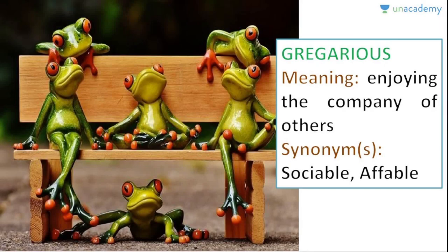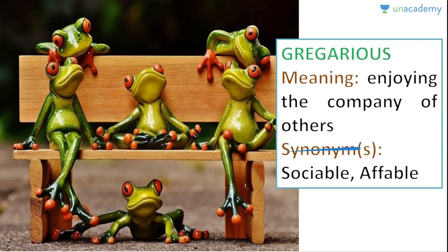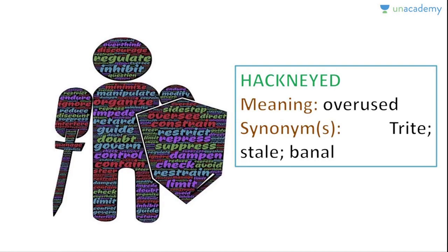Gregarious — look at this center frog surrounded by all his friends. Gregarious is somebody who enjoys the company of others — a sociable or affable person. If you know somebody who is outgoing, sociable, fond of the company of other people, you might want to call him or her gregarious. Gregarious people are likely to hang out with friends every weekend, whereas reserved people like to keep to themselves.